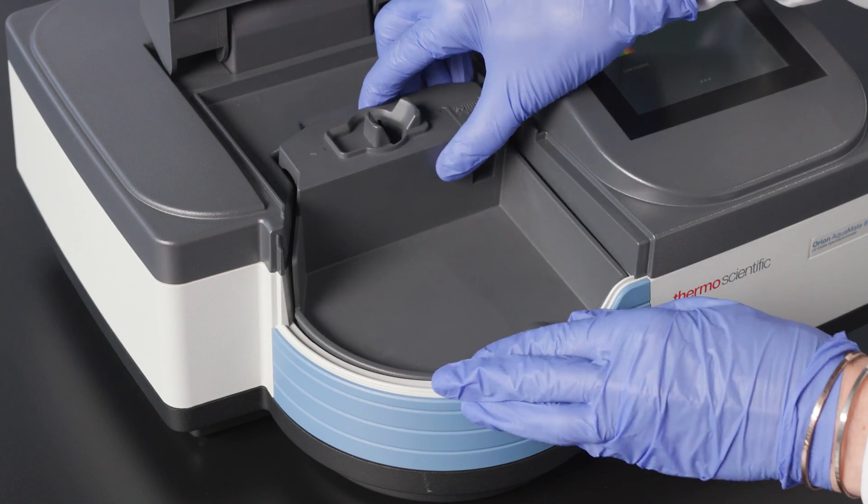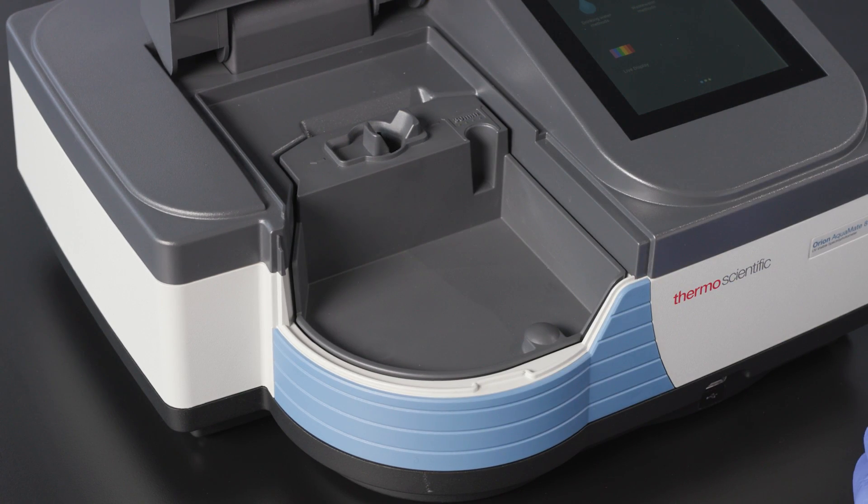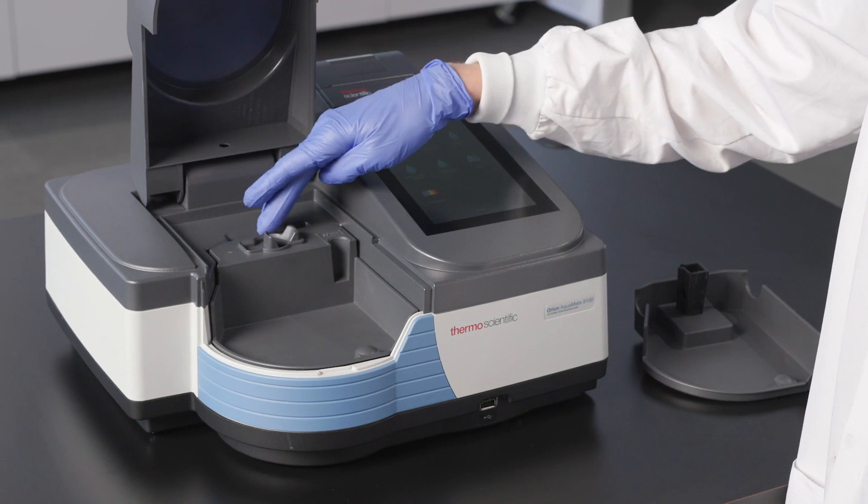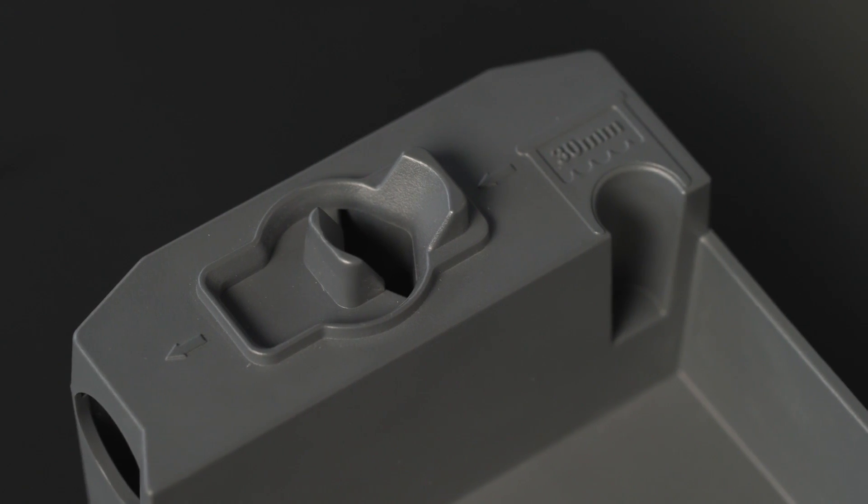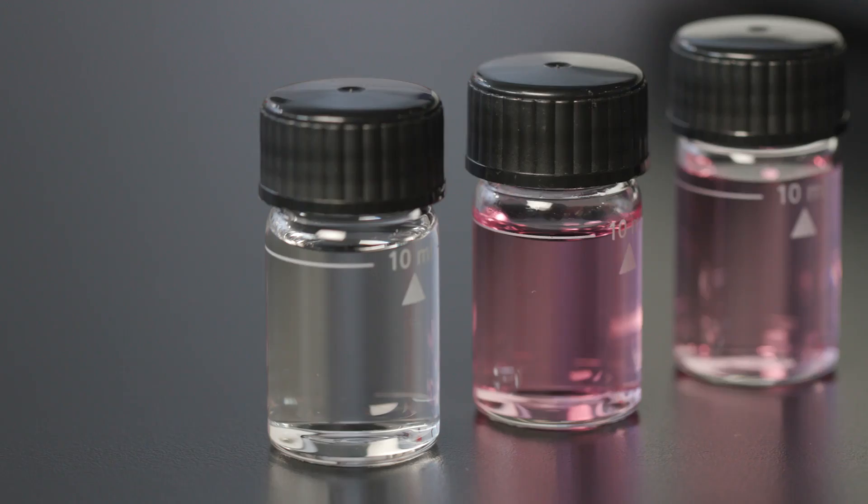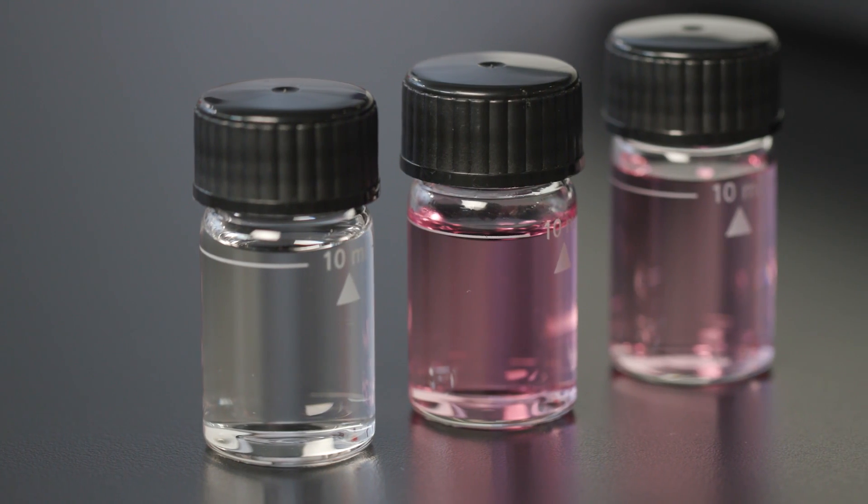The instrument is compatible with several different holders. The Aquamate comes with this round cuvette holder that works with cuvettes from 12 to 25 millimeters in diameter, the sizes that work with our Orion Aquafast reagents.